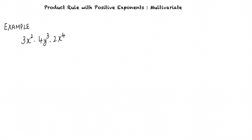We first multiply the constants. Multiplying the constants, we have 3 times 4 times 2, which equals 24.